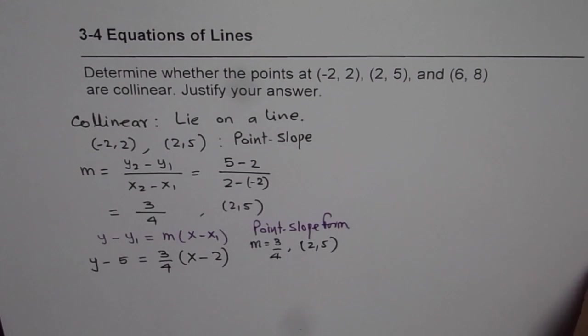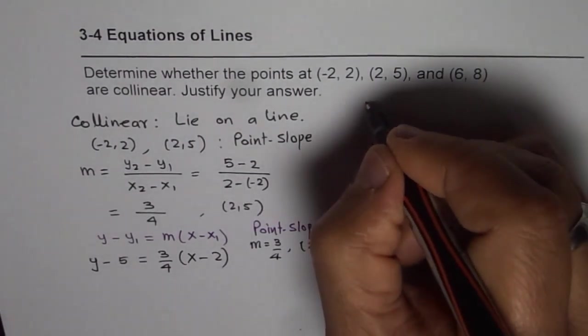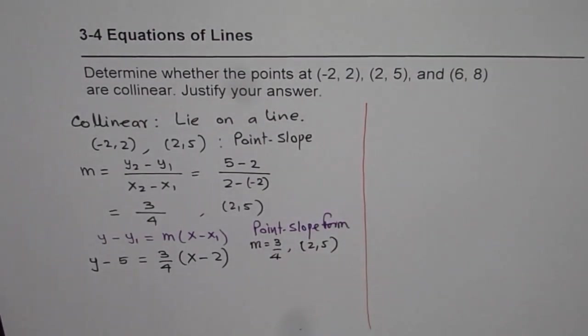Now we will verify whether the third point which is (6, 8) lies on this line or not. As you know from the definition of line, a distinct line will always contain at least two points.